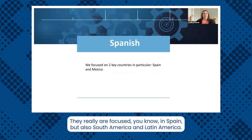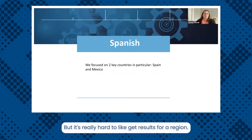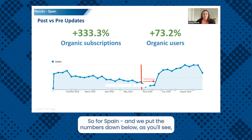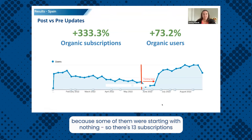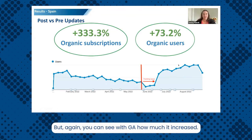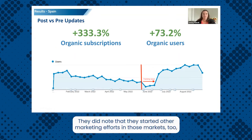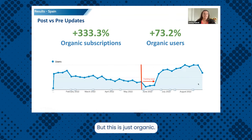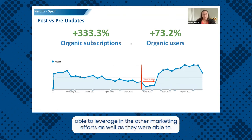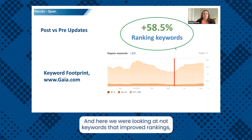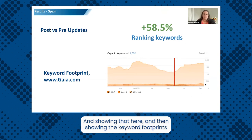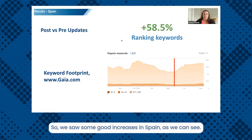For each language, they want to focus on global markets — especially for Spanish, they're focused on Spain, South America, and Latin America, but it's hard to get results for a region so we focused on Spain and Mexico as a big market. For Spain, some numbers were starting from nothing — like 13 subscriptions compared to three — but it's a huge increase, and you can see in GA how much it improved. This also lined up with other marketing efforts they started in those markets around the same time, which would influence it, but this is just organic. Without those pages, they wouldn't have been able to leverage those marketing efforts as well. The same applies to clicks, impressions, and new ranking keywords that didn't exist before, showing solid increases in the keyword footprint in Spain.